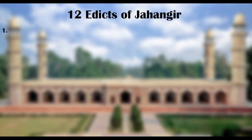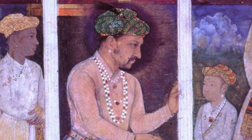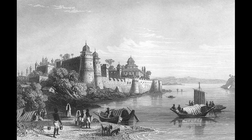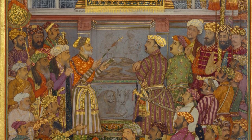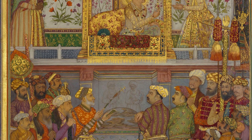1. Forbidding the levy of cesses under the names of Tamgha and Mir Bahri and other burdens which the Jagirdars of every province and district had imposed for their own profit. This order basically put a ban on imposing taxes like the Tamgha tax, which is a stamp tax or a royal seal — a Turkish word — imposed on merchants when they entered across the Mughal territories, while Mir Bahri was the charge collected for port use inside the Mughal dominions. This put an end to the profit exploitation by the Mughal Jagirdars, who were holders of land assignments in lieu of judicial and police duties.